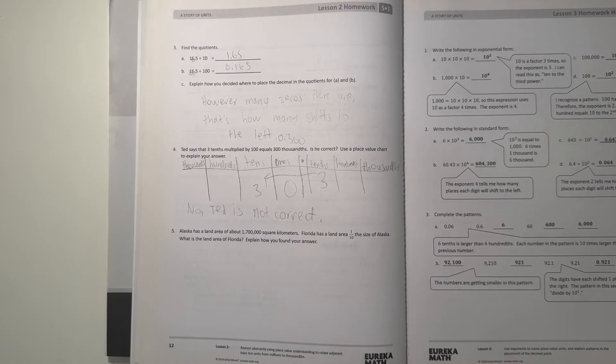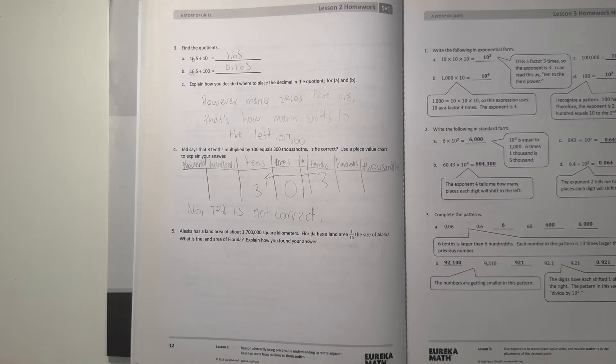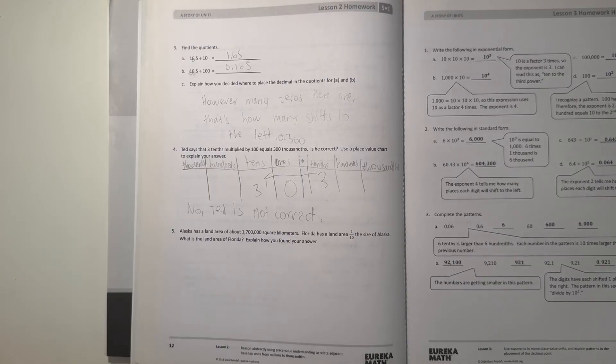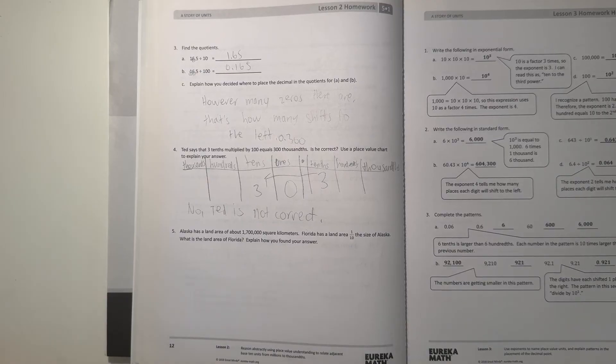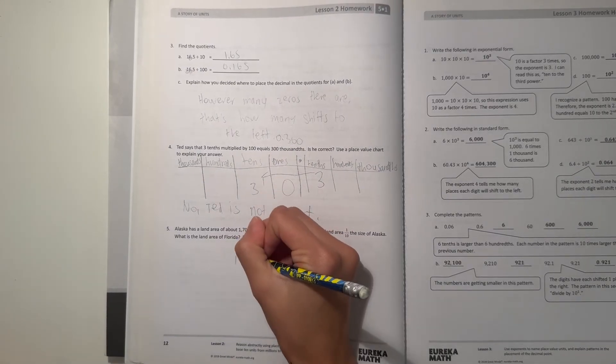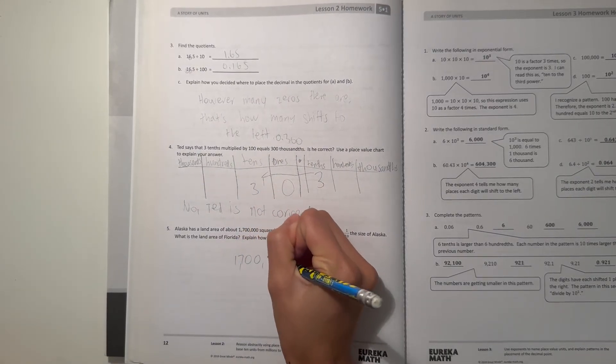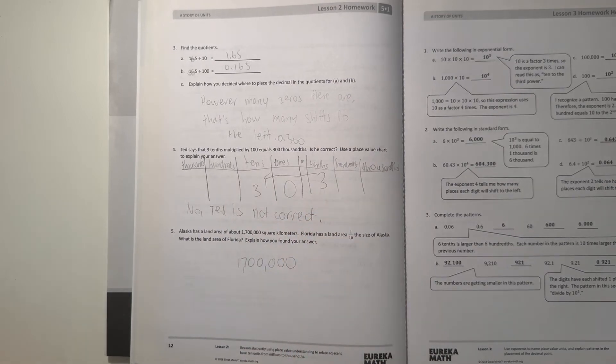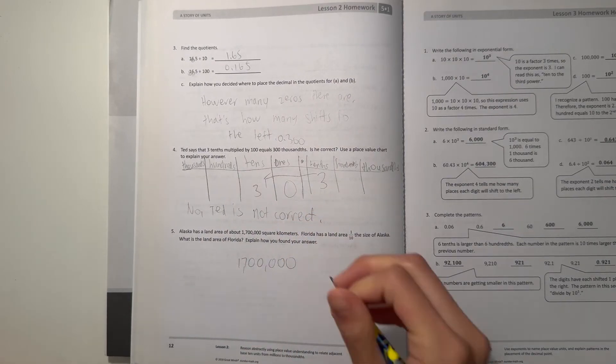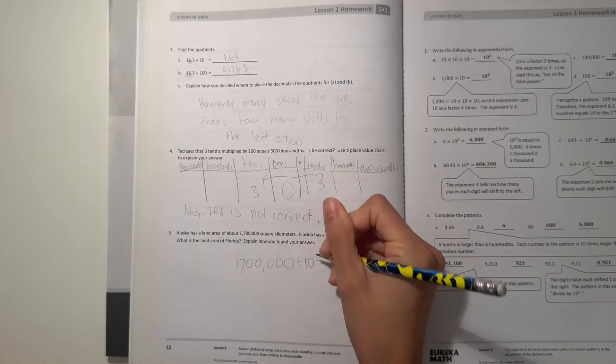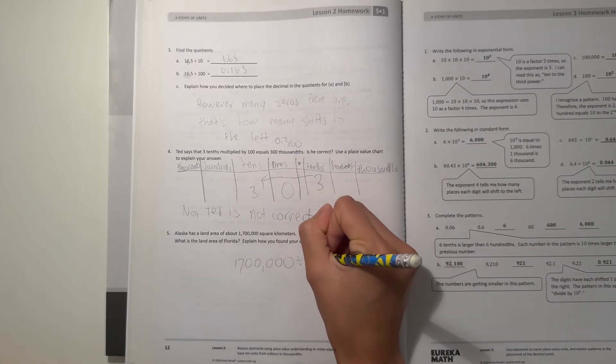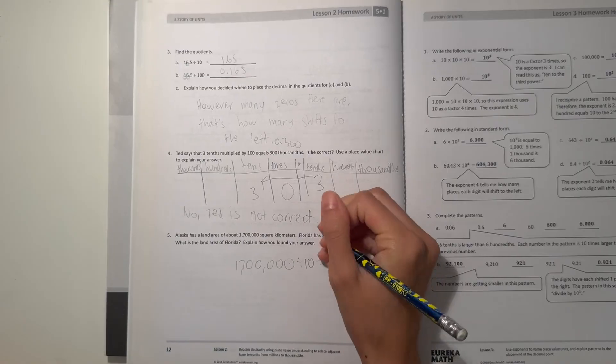And number five, Alaska has a land area of about 1 million 700,000 square kilometers. Florida has a land area one tenth the size of Alaska. What is the land area of Florida? Explain how you found your answer. Alright, so Alaska is 1 million 700,000, and since Florida has one tenth the size that means we're dividing it by 10. So we're dividing by 10, there's one zero in 10, so we take away one zero.